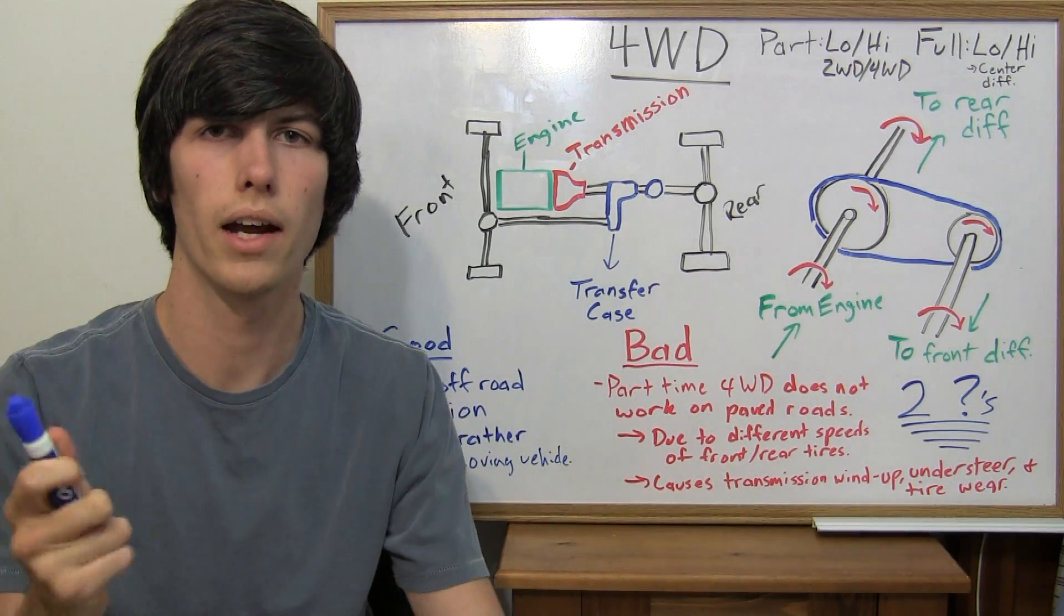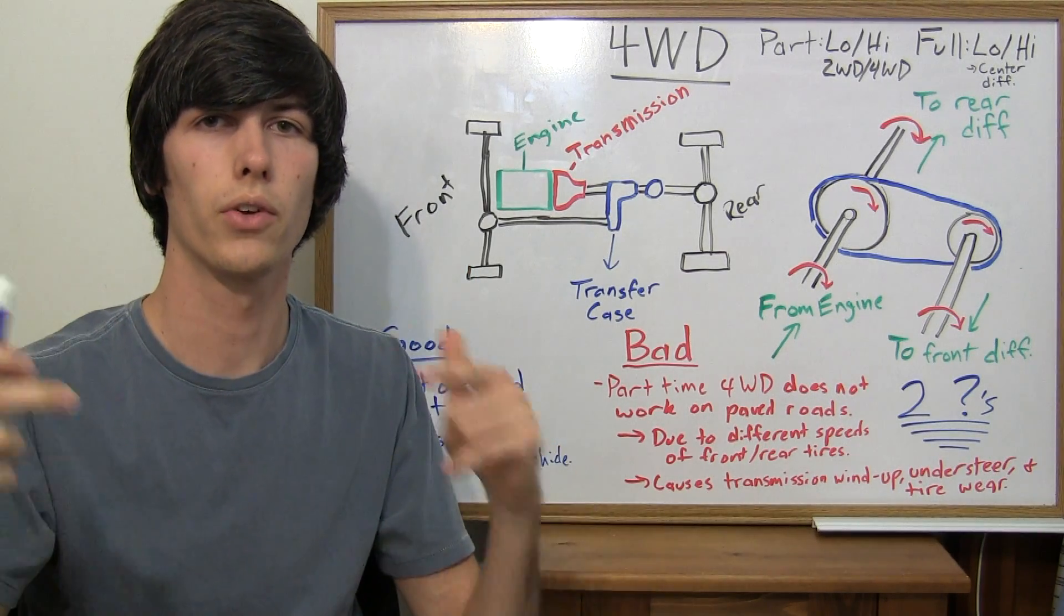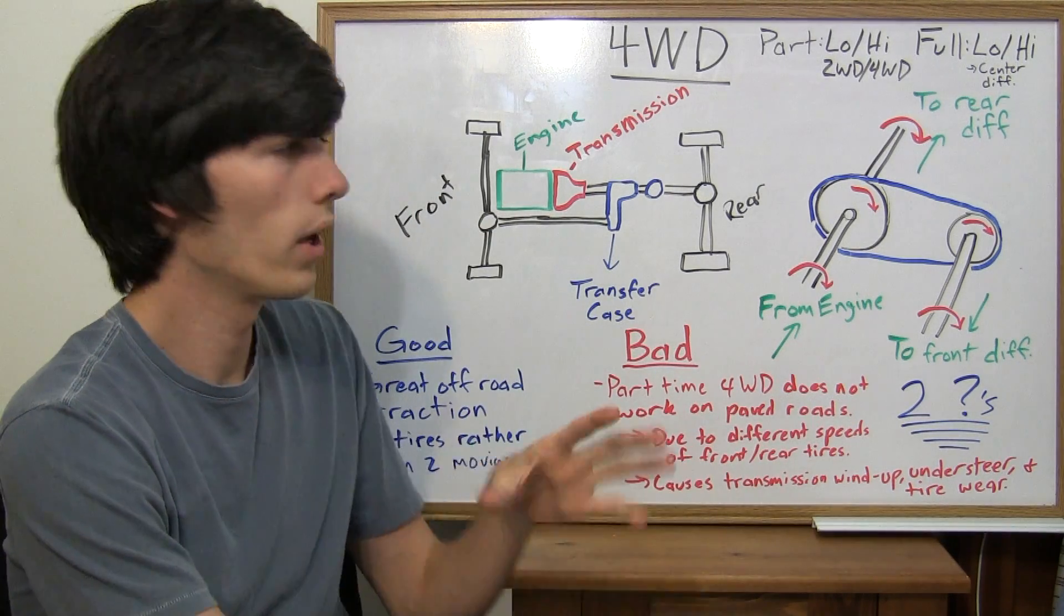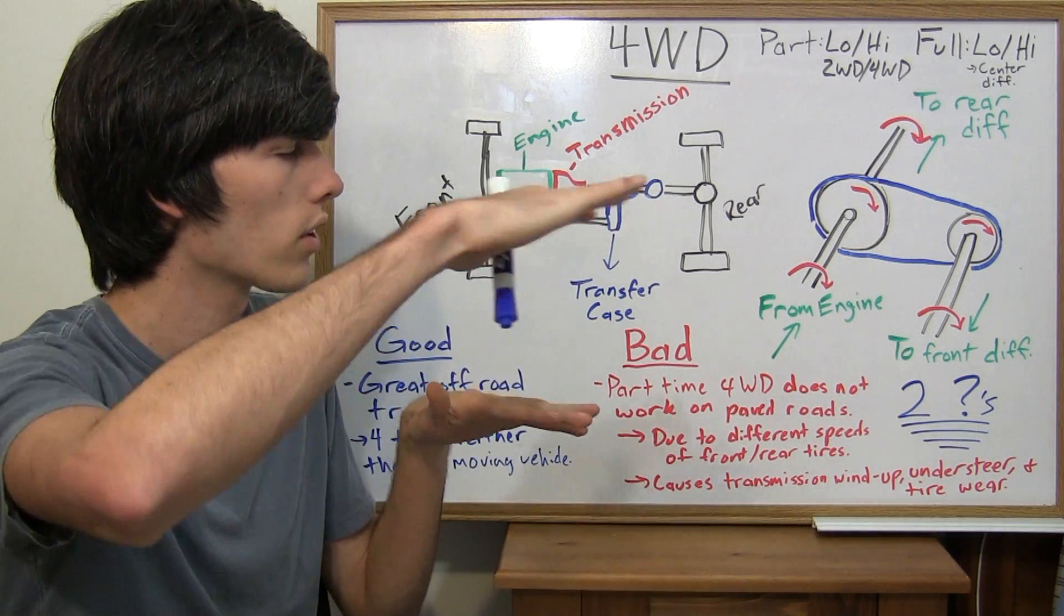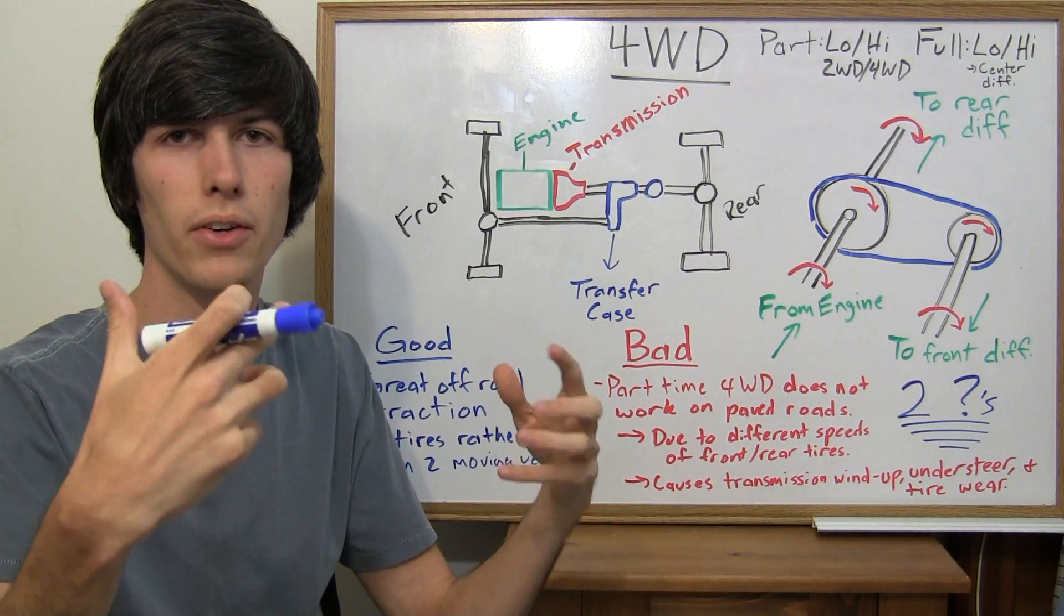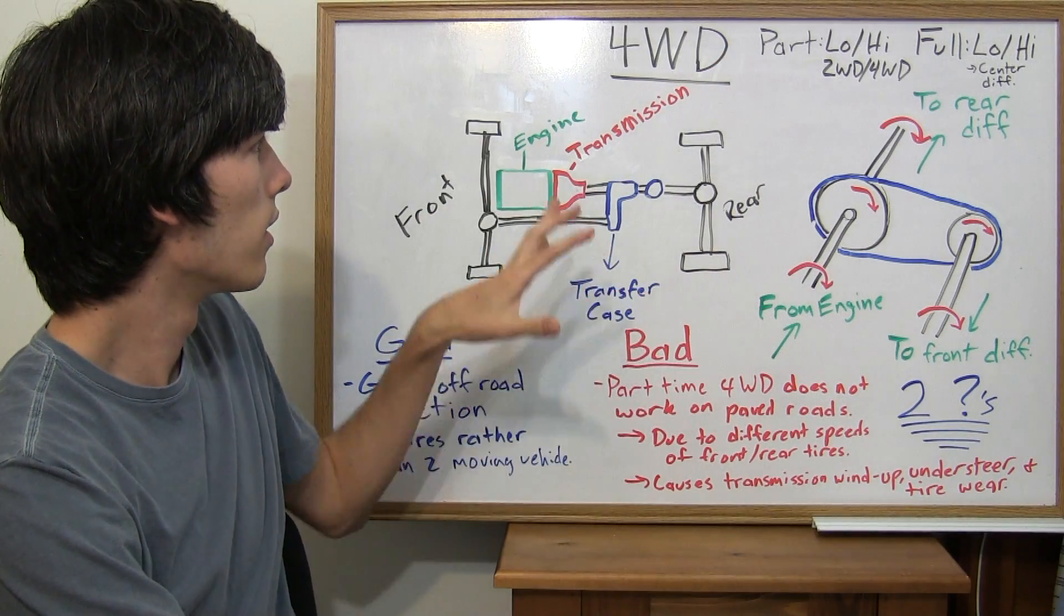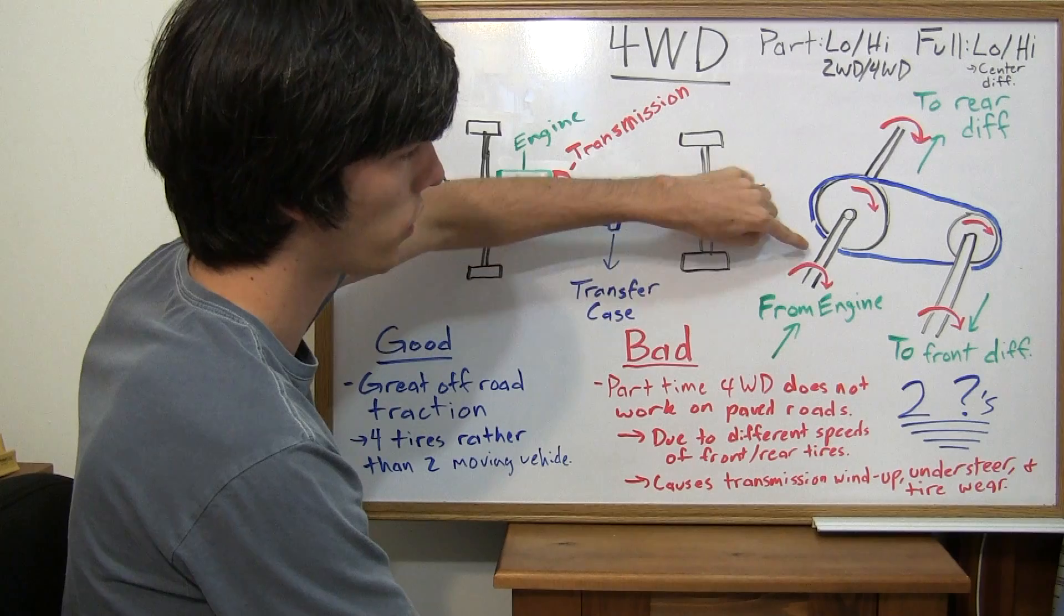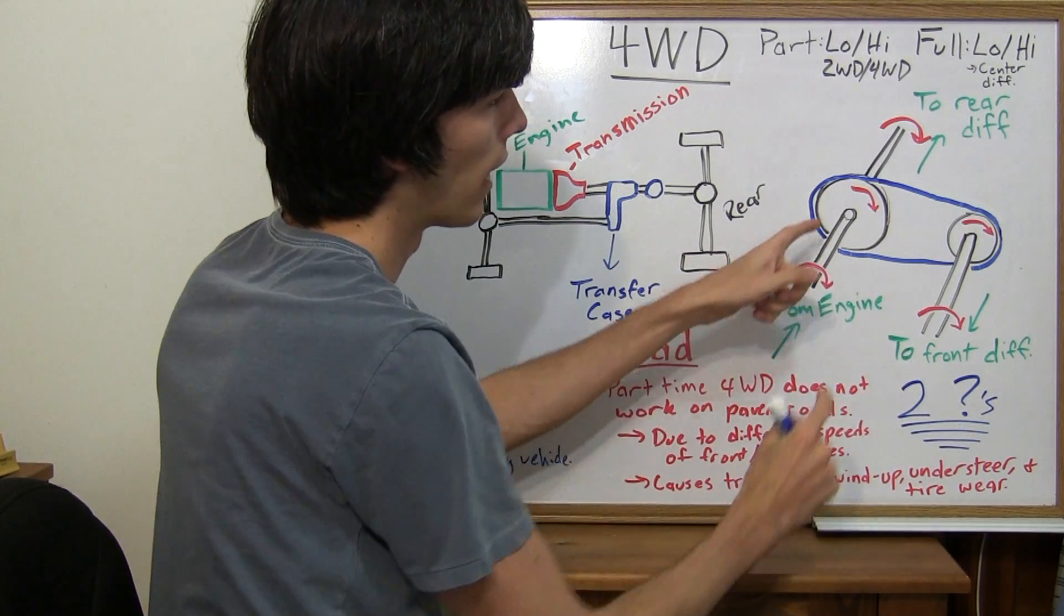Now why would you do that? If you've watched my video on the Ackerman Principle, you know that when a car goes around a turn, the front tires rotate faster than the rear tires. If you're on pavement and this is occurring, you're going to have some what we call transmission wind-up, and it's going to cause understeer, and it's going to cause your tires to skid. What happens is your tires in the front want to rotate faster, but they're not allowed to because they'd be locked up in the part-time four-wheel drive setup. So you add this differential, and that allows this shaft right here, this rotation right here, to be different from this output right here.